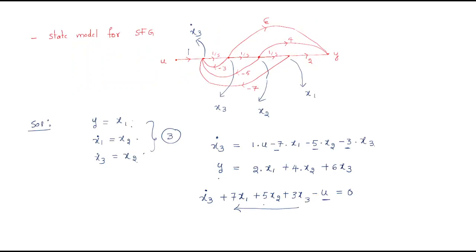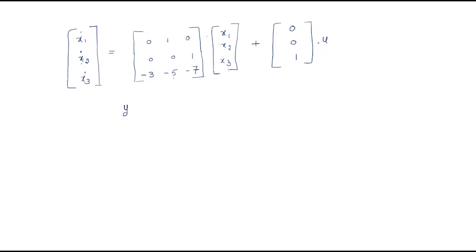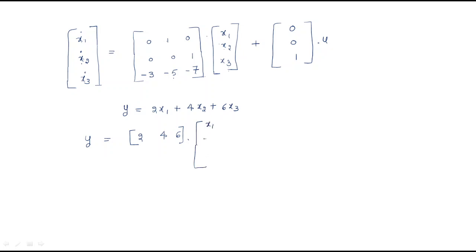For the output equation, y equals 2x1 plus 4x2 plus 6x3. This gives us the C matrix as [2, 4, 6] multiplied by the state vector [x1, x2, x3]. So this is the A matrix, this is the B matrix, and this is the C matrix — three different matrices forming the complete state space model.